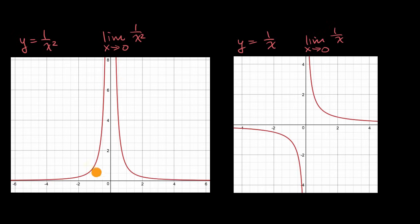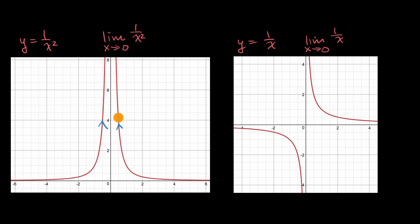In the left scenario, as x becomes less and less negative and approaches zero from the left-hand side, the value of one over x squared is unbounded in the positive direction. The same thing happens as we approach from the right — as we become less and less positive but still positive, one over x squared becomes unbounded in the positive direction. So we said that this limit is unbounded.